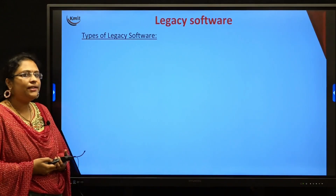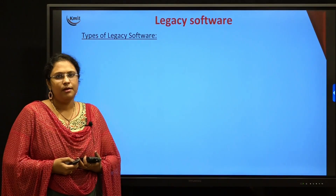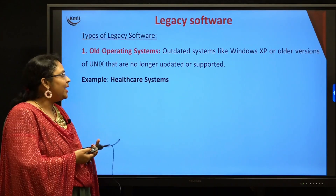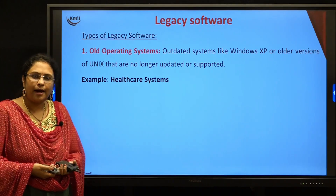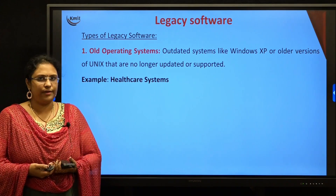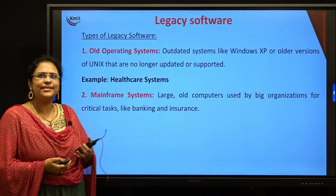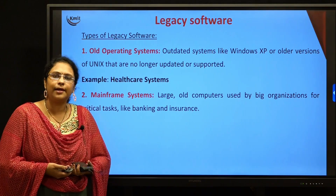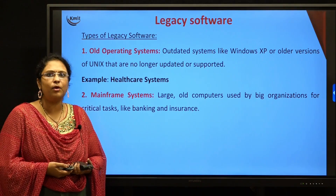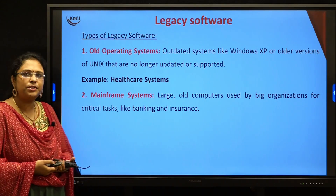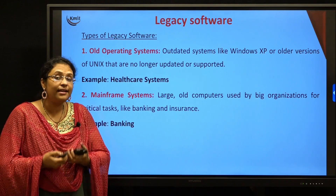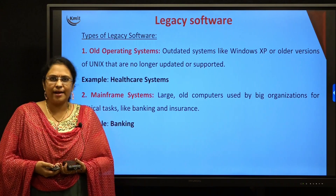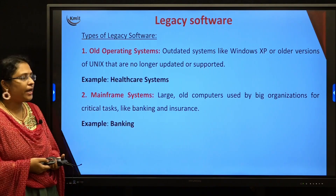Now let us see what are the different types of legacy softwares. The first is old operating systems. Many companies or healthcare sectors are still using very outdated softwares. For example, Windows XP is outdated but there are still some healthcare systems using it. The next type is mainframe systems — banking sectors are still using old complex mainframe systems to run their operations.